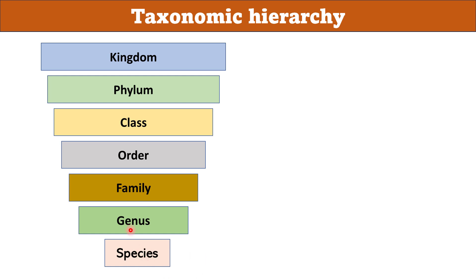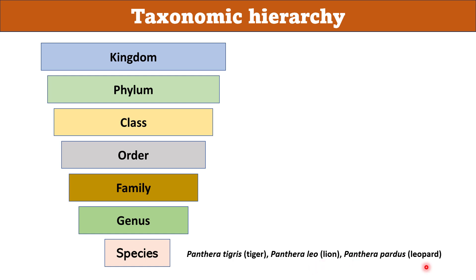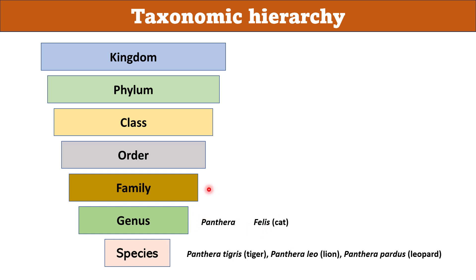Let's see how taxonomic hierarchy works. Certain similar species come in the same genus. Panthera tigris is tiger, Panthera leo is lion, Panthera pardus is leopard. They are three different species but all are similar animals, hence they are in the same genus Panthera. Certain similar genera come in the same family. Genus Panthera and genus Felis are different but have some similarities, hence they come in the same family Felidae.